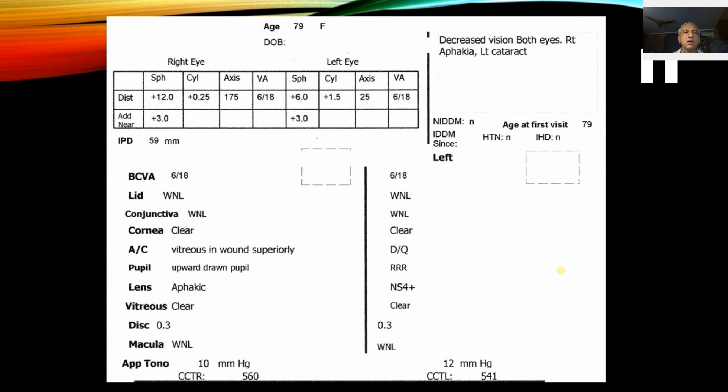We're discussing a case of a 79-year-old female with a history of decreased vision in both eyes. She's aphakic on the right and has a cataract on the left. The refractive error showed she's plus 12 diopters on the right with visual acuity of 6/18, and plus 6 with 1.5 diopter cylinder on the left with visual acuity of 6/18.